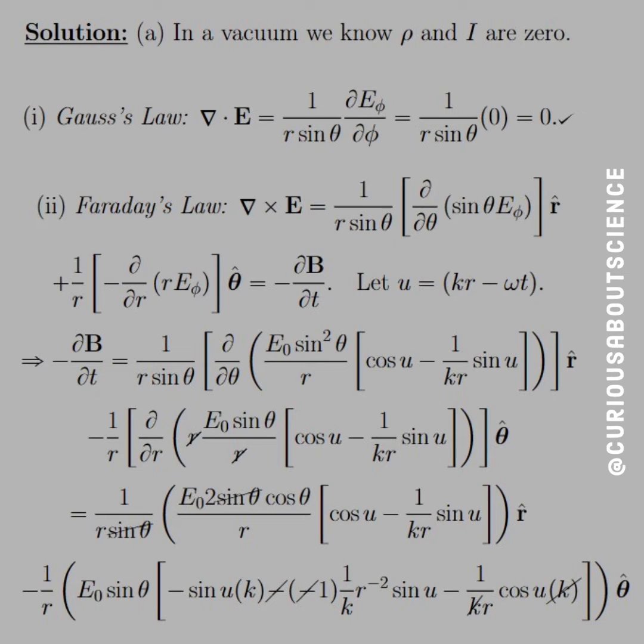Take the derivative. For theta, we get 2 sin cos θ, thanks to chain rule, so the sine factors cancel out for our r̂. And then for the r derivative, we have what looks like a product rule with the 1/(kr) and sin u. Gross.